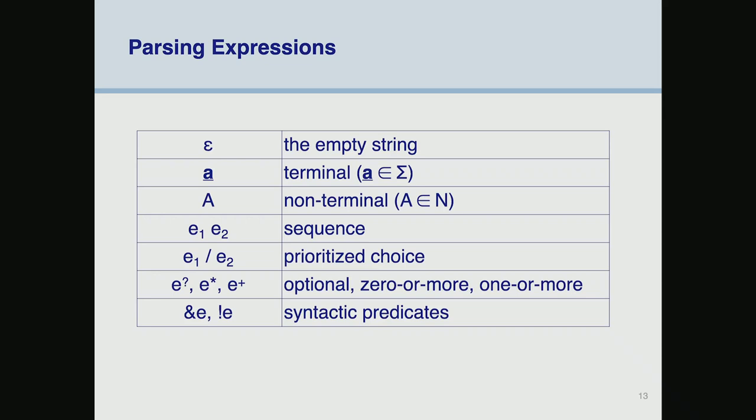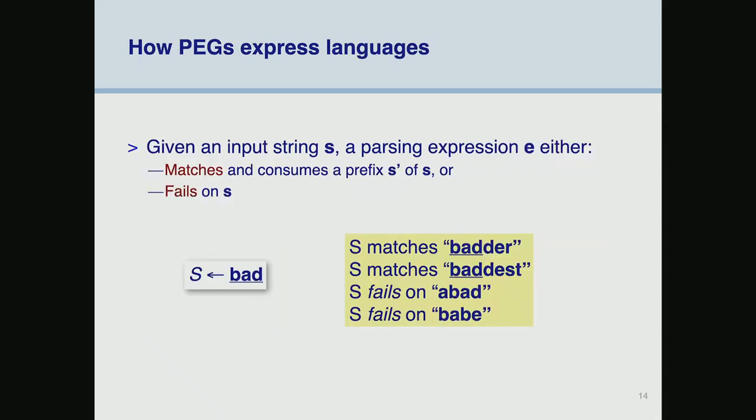We have repetitions — optional, zero-or-more, one-or-more as before — and this is new: the syntactic predicates. Ampersand-E says there's an E following but don't consume it; bang-E says there better not be an E following. So I can match 'foo' where there's no 'bar' afterward without consuming anything — it just states something about what's in the input stream. Everything here is familiar except that prioritized choice is different from the or-bar since order is important, and the syntactic predicates are new.